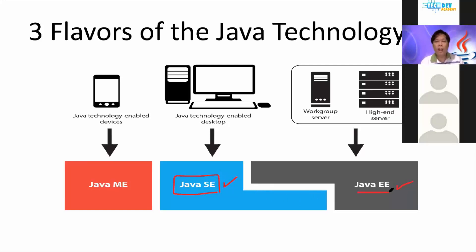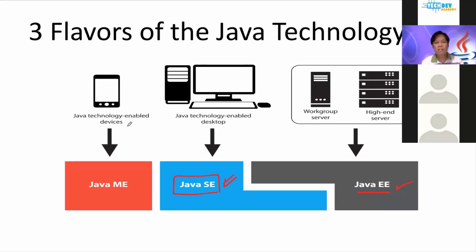Java EE is where you can combine your knowledge in HTML, CSS, and JavaScript together with Java SE. Java ME, or the Micro Edition, is also something that's nice to know, but it's not that popular nowadays unlike Swift or Android.